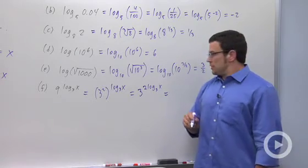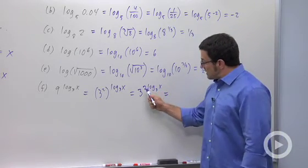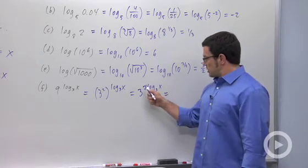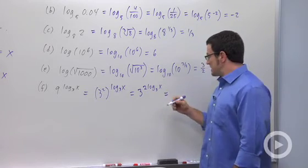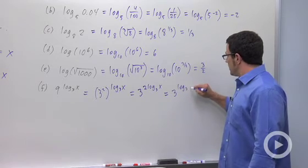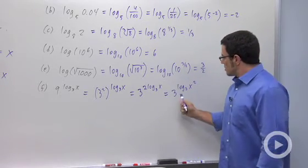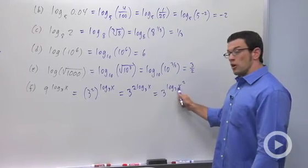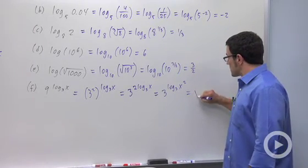And then I can use the log of a power property. This coefficient can come inside as an exponent. I get 3 to the log base 3 of x squared. So by the second identity, 3 to the log base 3 of x squared is just x squared.